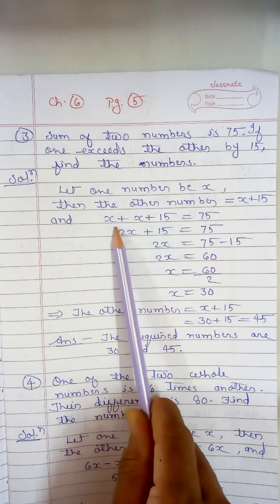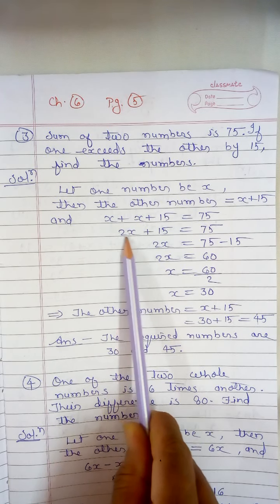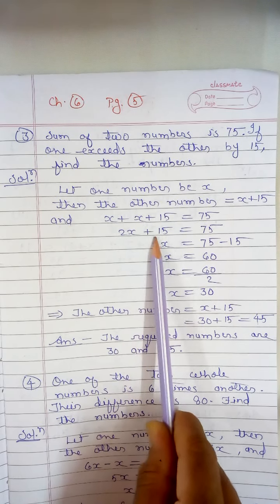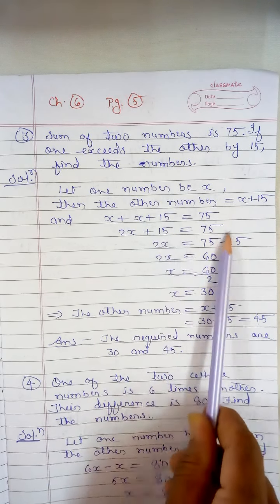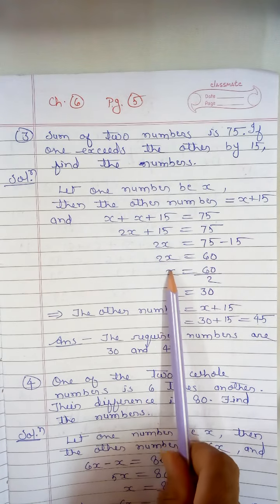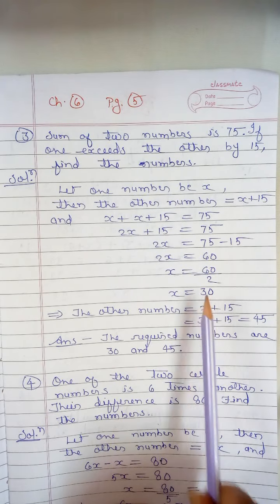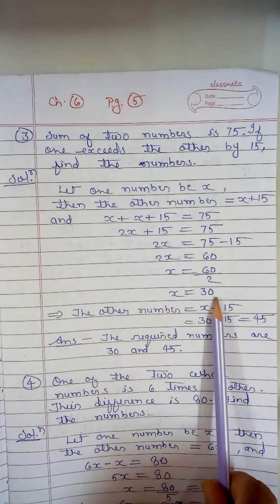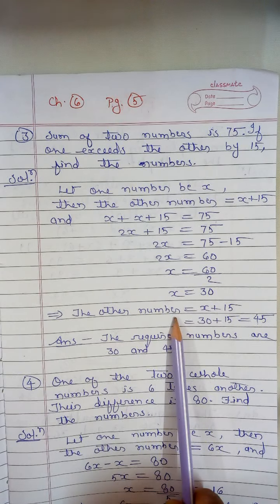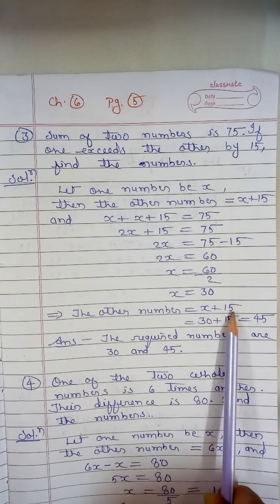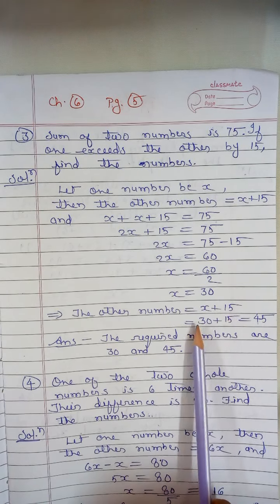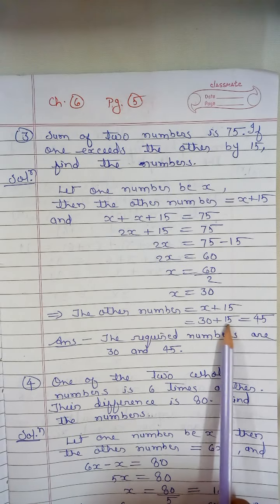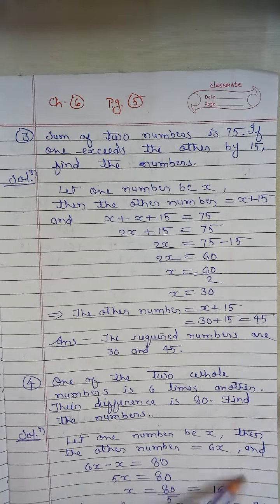By adding the like terms: 2x plus 15 equal to 75, which gives x equal to 60 upon 2, and x equal to 30. So the other number will be x plus 15, that is 30 plus 15 equal to 45.